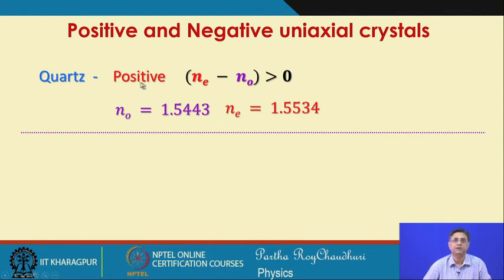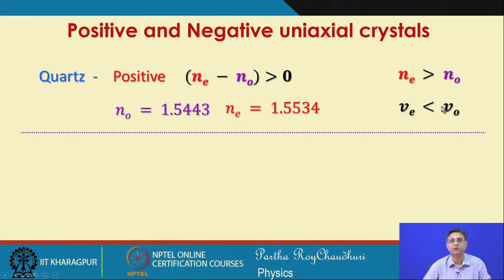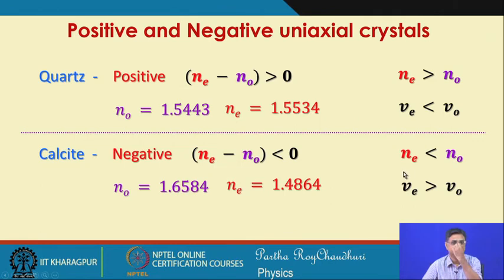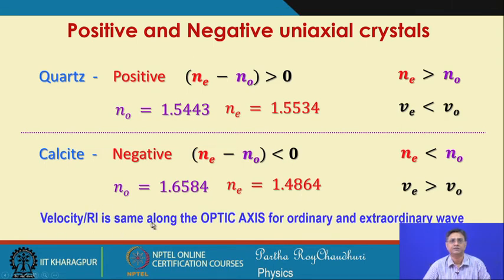For quartz, a positive crystal, n_e > n_o — the extraordinary refractive index exceeds the ordinary — with typical values of n_o = 1.5443 and n_e = 1.5534, so the e-wave velocity is less than the o-wave velocity. For calcite, a negative crystal, n_e < n_o, and typical values show the extraordinary wave travels with a higher velocity than the ordinary wave. Along the optic axis the refractive index is the same for both ordinary and extraordinary waves.